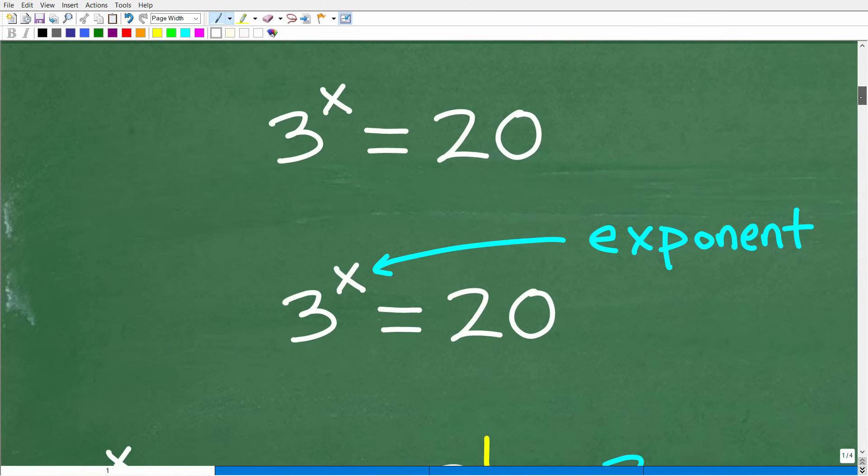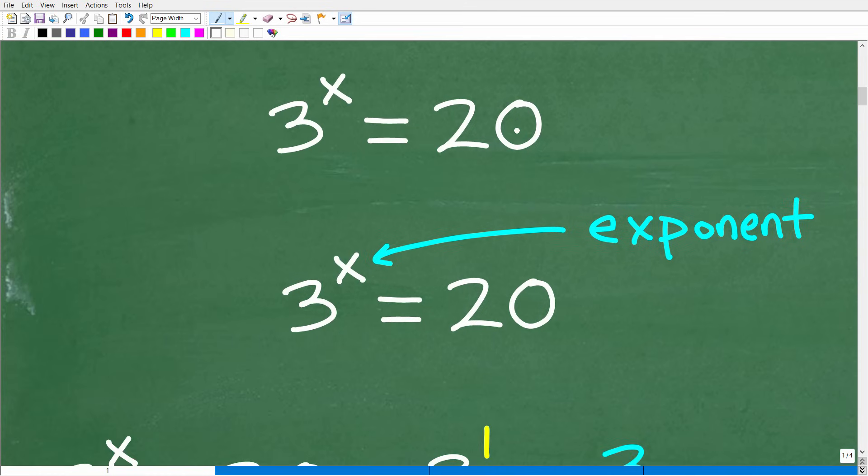Okay. So let's get going here. So three to the X power is equal to 20. Now, what type of equation is this? So in algebra, you need to identify what type of equation you're dealing with because there's all sorts of different type of equations: polynomial equations, rational equations, radical equations, systems of equations, linear equations, quadratic equations.